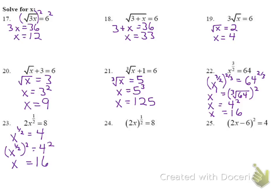Number 24: notice the 2 in 2x is part of the expression inside the exponent. So I raise both sides to the power of 2 first — squaring both sides gives 2x equals 8 squared, which is 64. Dividing both sides by 2 gives x equals 32.